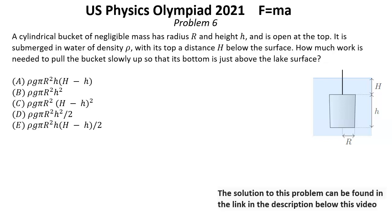Problem number 6. A cylindrical bucket of negligible mass has radius R and height H and is open at the top. It is submerged in water of density rho with its top a distance H below the surface. How much work is needed to pull the bucket slowly up so that its bottom is just above the lake surface?